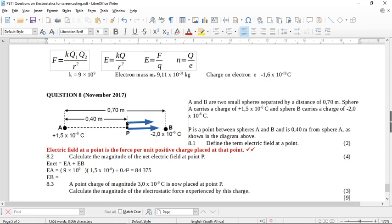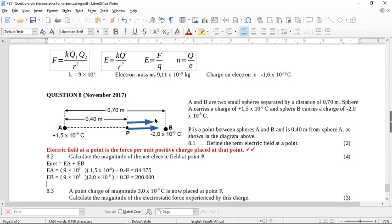Now we need to find the field at B. Still KQ over R squared. So it's still 9 times 10 to the 9. What is the charge here though? The charge here is 2 times 10 to the negative 6. So make sure that you don't put the sign there. We don't need the sign there. And this is divided by the distance squared. So if this is 0.7 and this is 0.4, this distance is 0.3. If you put this into your calculator, you should end up with 9 times 10 to the 9 times 2 times 10 to the negative 6 divided by 0.3 all squared. I've got 200,000 Newtons per Coulomb.